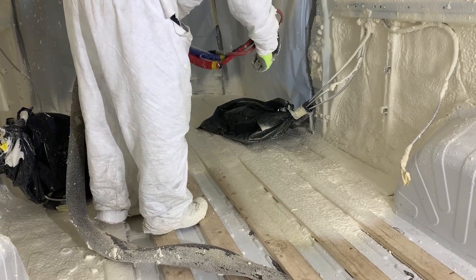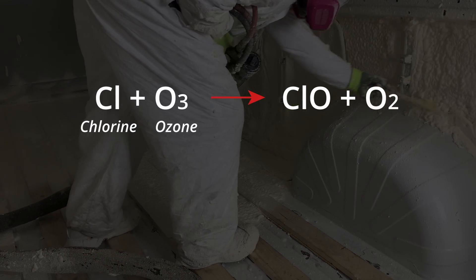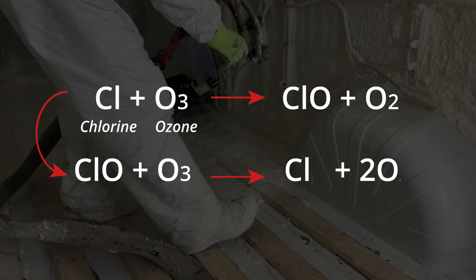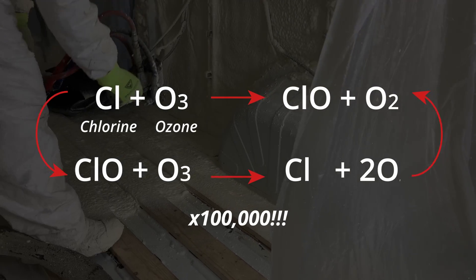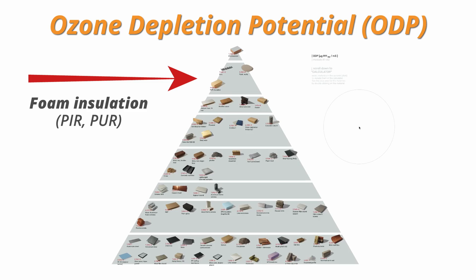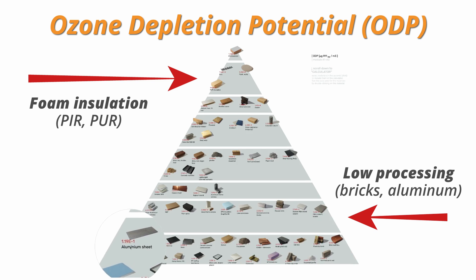The second is ozone depletion potential. During manufacturing, materials release certain gases that can degrade the ozone layer. When a single chlorine or bromine atom comes into contact with ozone in the stratosphere, it can destroy over 100,000 ozone molecules. This decreases protection from the sun's ultraviolet radiation, affects flora and fauna, and can even increase the risk of skin cancer. Polyiso and polyurethane foam insulation are the most harmful, while materials that require low processing like bricks and aluminum sheets are the least harmful.